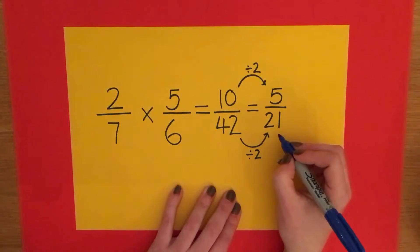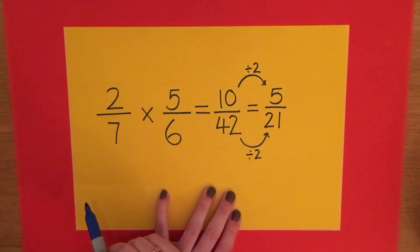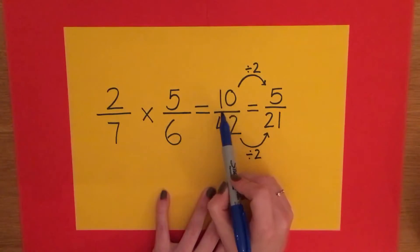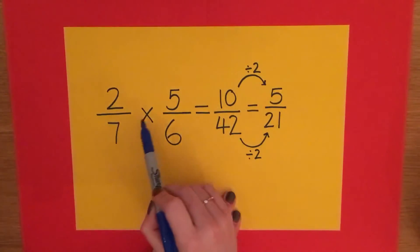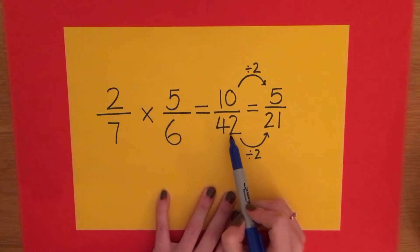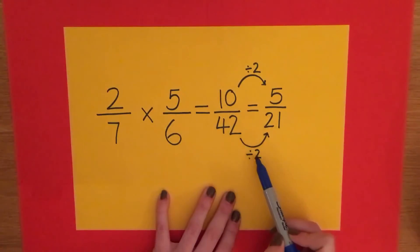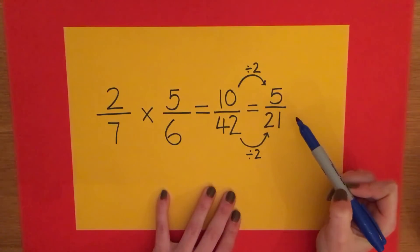Let's just look at that again. The rhyme goes, multiplying fractions, no big problem. Top times top over bottom times bottom. And don't forget to simplify before it's time to say goodbye.